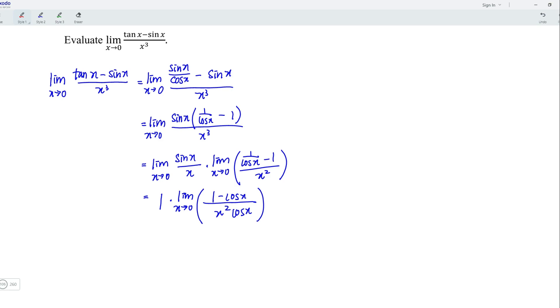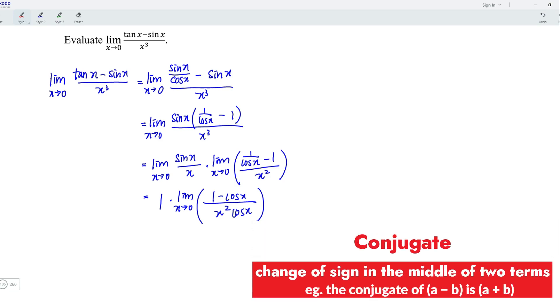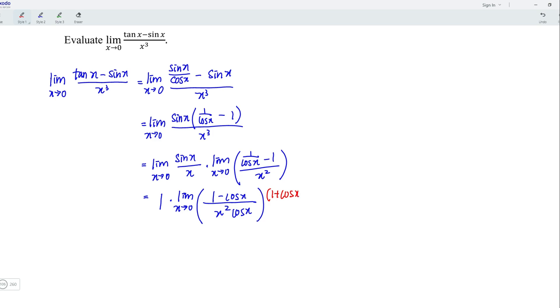Then I'm going to apply the conjugate for the numerator, which is 1 plus cos x. Of course, we could not simply multiply something to the numerator. Thus, we have to multiply exactly the same thing to the denominator. Let's expand it and we should obtain the limit.